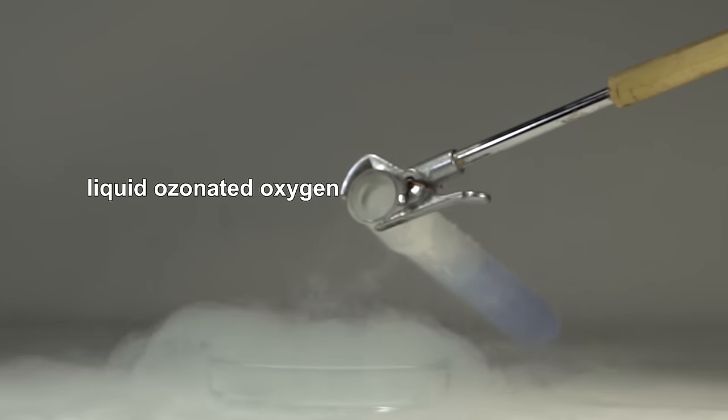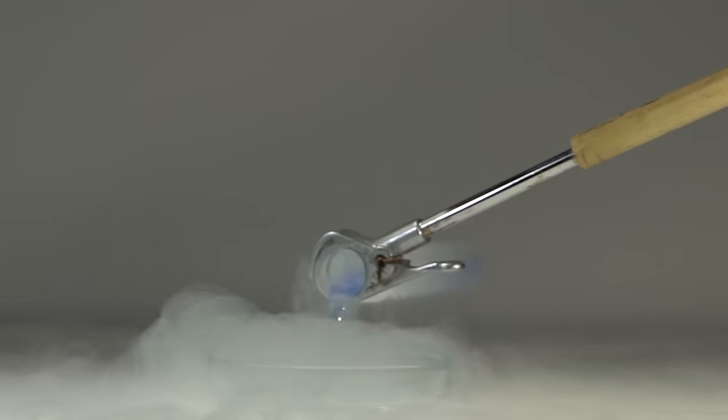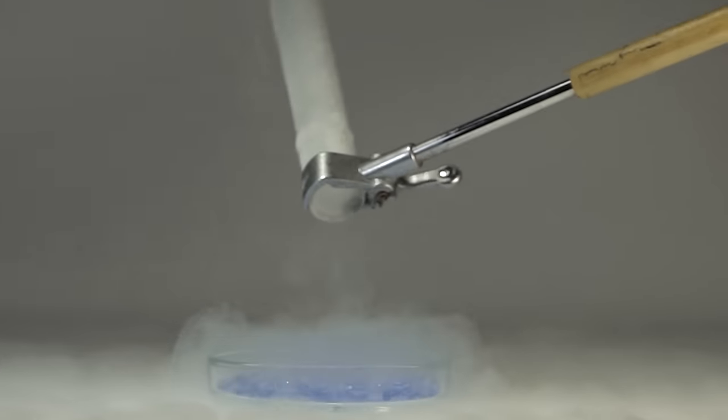Now, let's drop a few pieces of frozen acetylene in liquid ozonated oxygen and see what will happen. Unlike pale blue liquid oxygen, liquid ozonated oxygen is bright blue. Oxygen starts boiling at much lower temperature than ozone does.